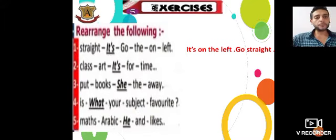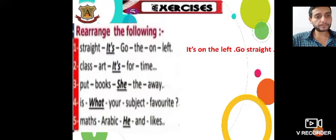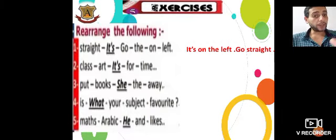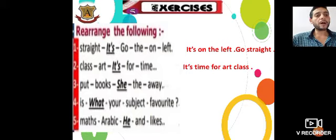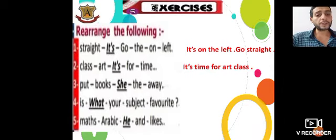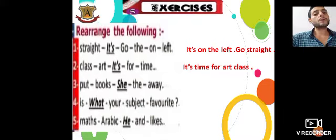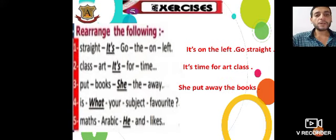Question number two: class, are, it's, for, time, art. The answer is: it's time for art class. Question number three: pot, box, she, put, away. The answer is: she put away the box.